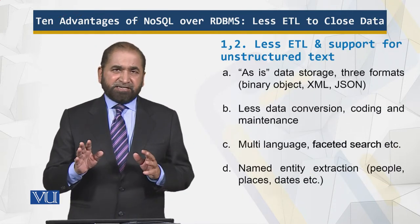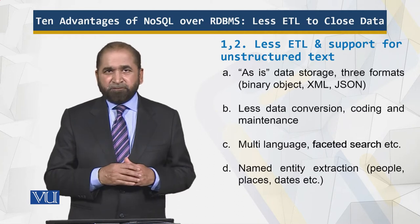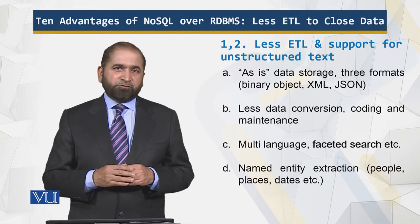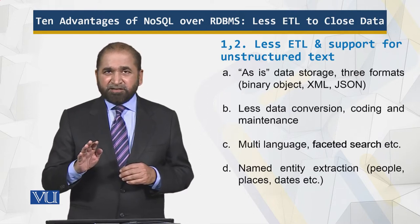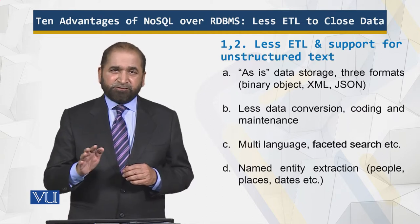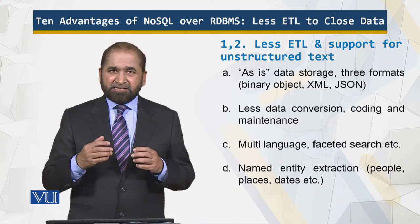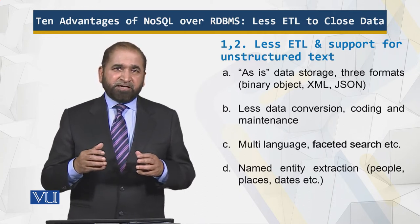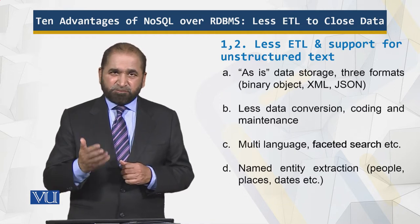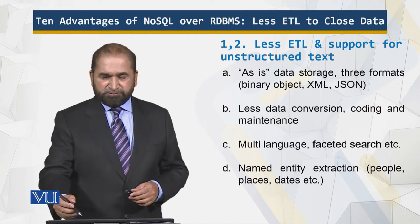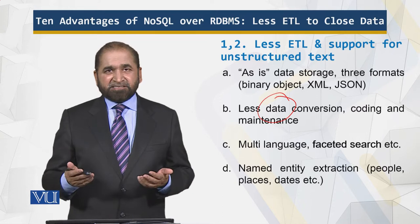First: less ETL. ETL is Extract, Transform, Load — this is the domain of data warehousing, covered in course CS614. As-is data storage is used because NoSQL supports these three formats. These three formats are not the four types of data structures — big difference. Since these three formats are supported, there is less coding, less effort, less plumbing code, less conversion of formats. So there is less ETL and less data conversion. When there is less data conversion, there is of course less maintenance, and when there is less maintenance, the maintenance cost goes down.